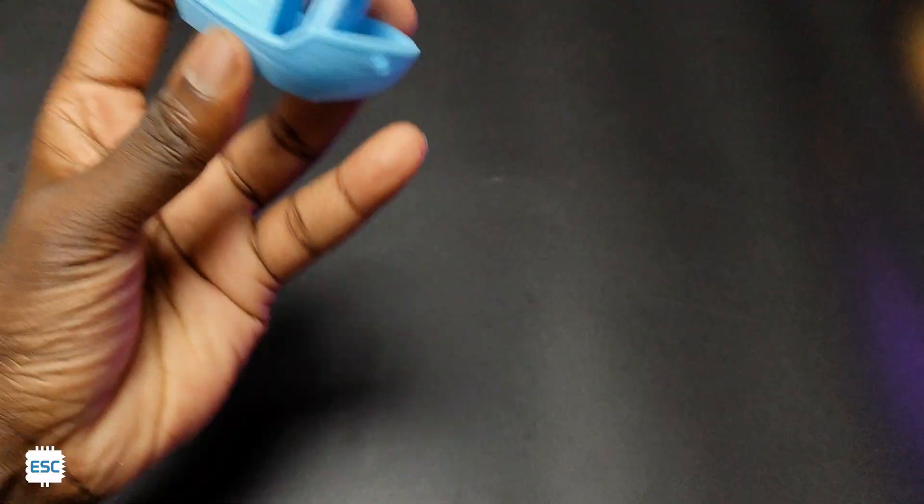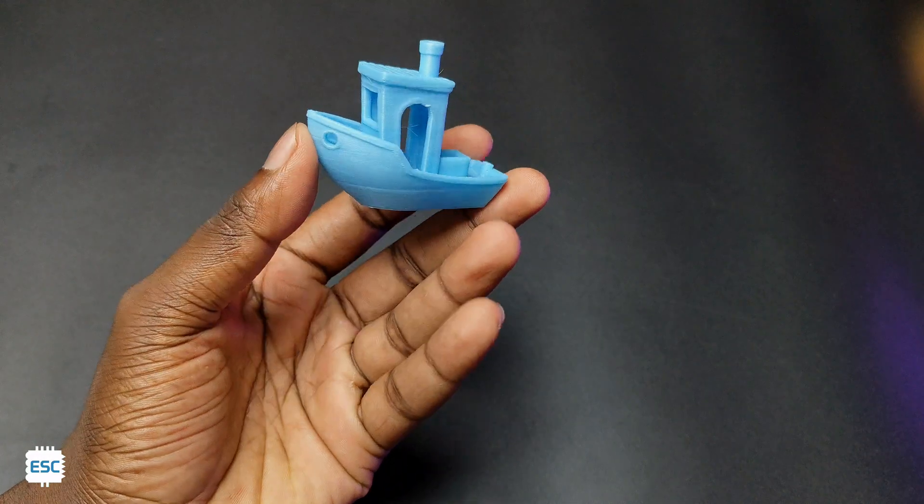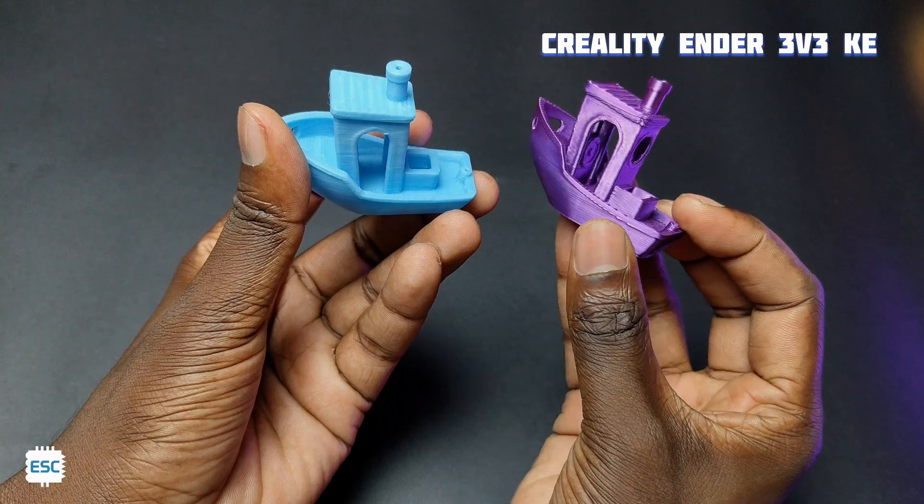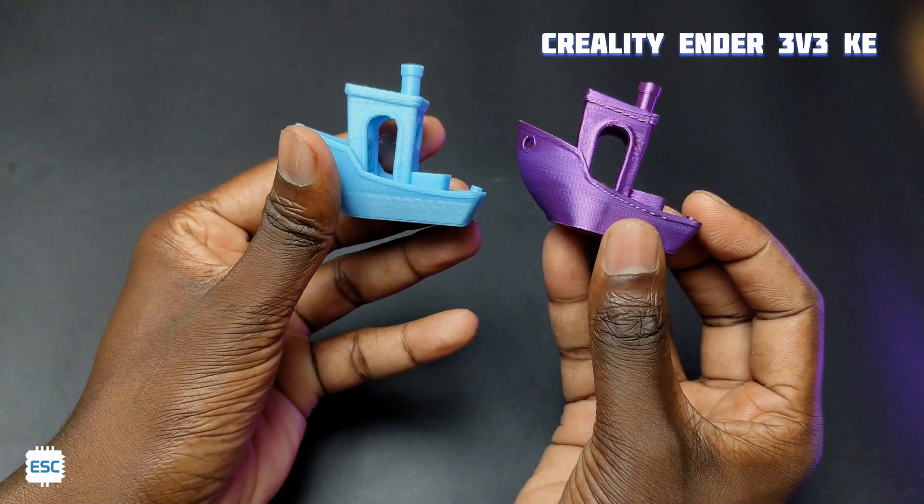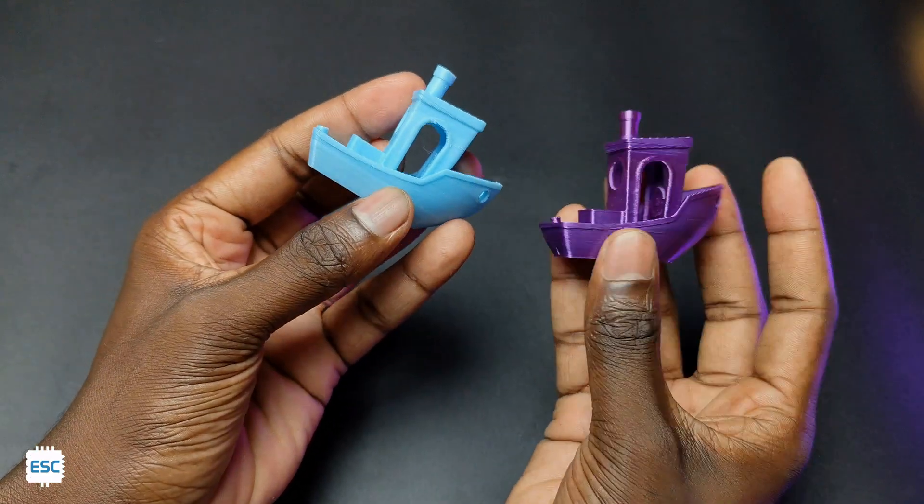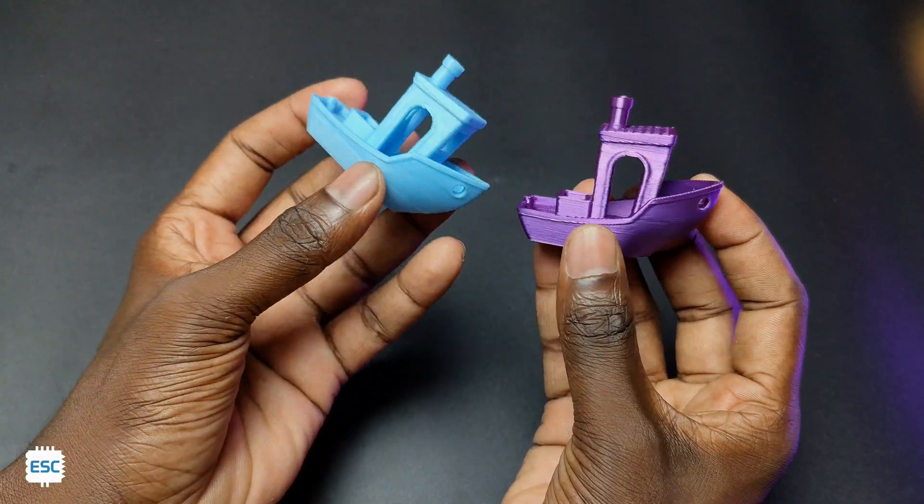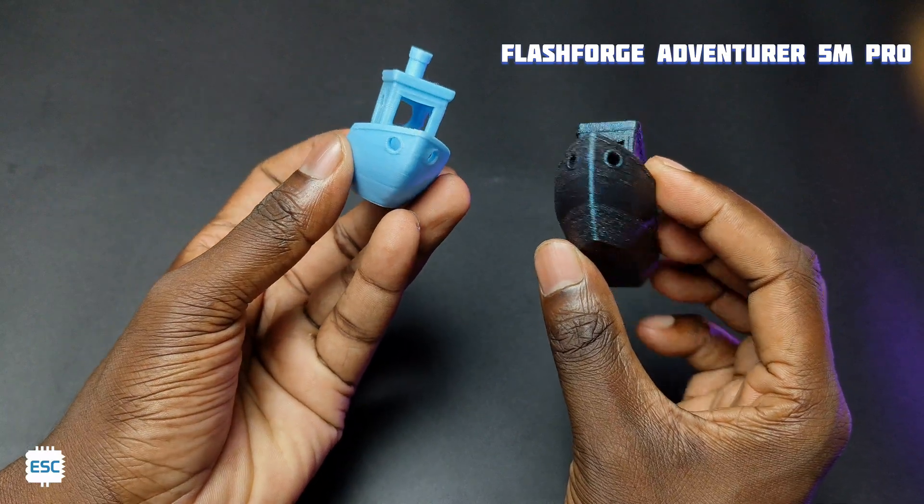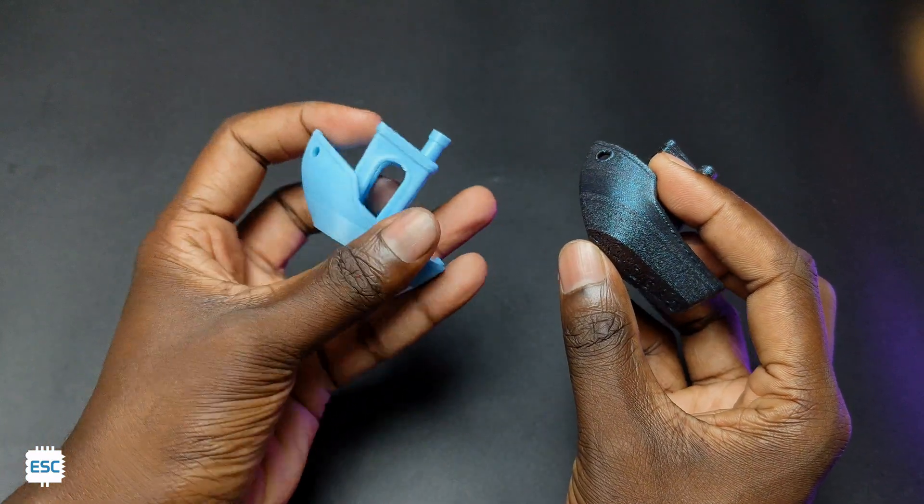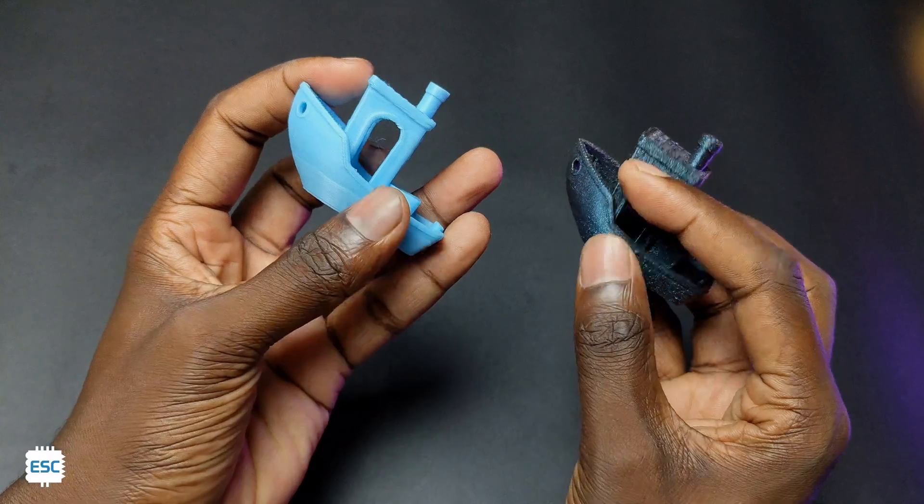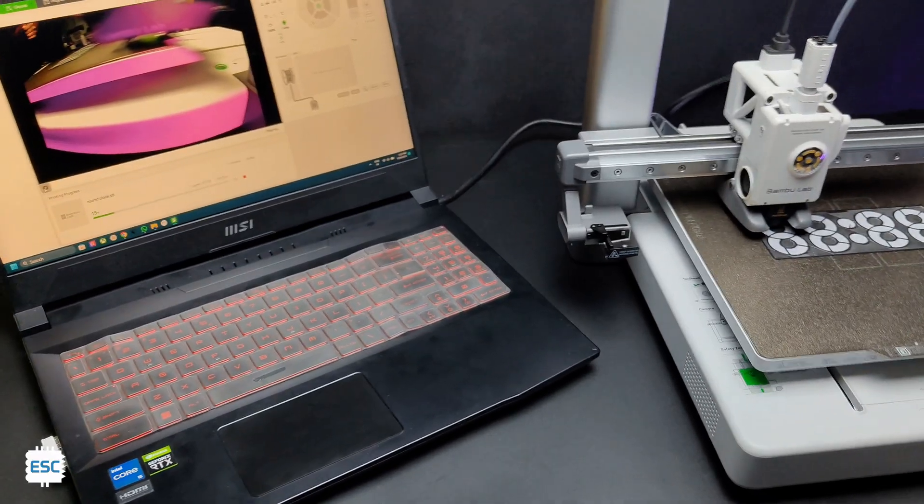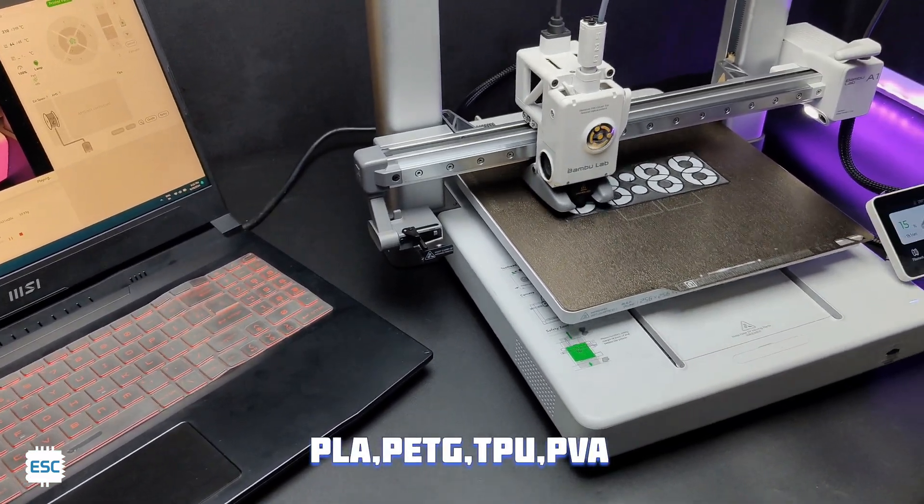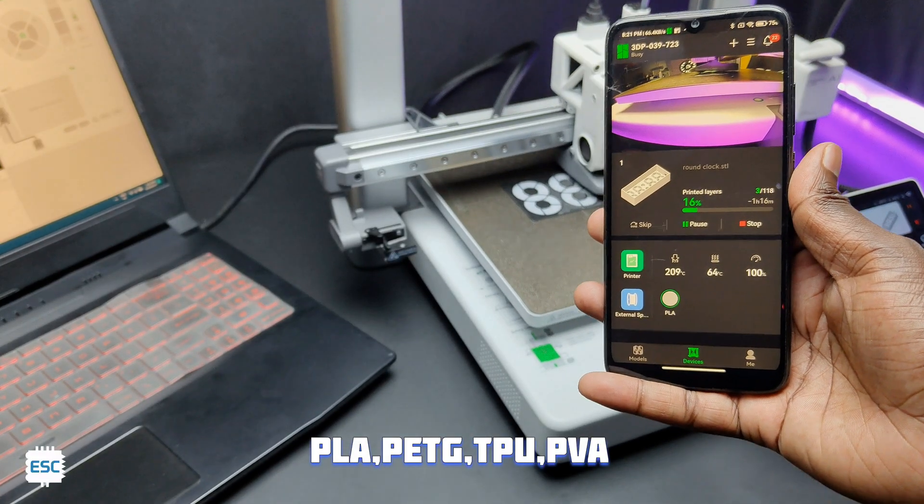It took only 40 minutes to print the benchy. The result is perfect as expected. We can monitor the printing status via the handy app and Bambu Lab studio. We can also control the printing using the app and studio. We can use this machine to print PLA, PETG, TPU and PVA and not suitable for ABS or ASA.